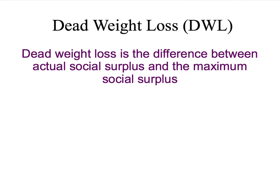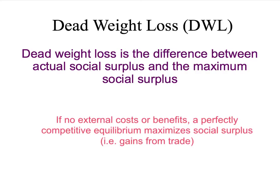In the last presentation, we introduced the concept of deadweight loss — the difference between actual social surplus and the maximum level of social surplus. We also found that if there are no external costs or benefits, the outcome that maximizes social surplus is in fact the perfectly competitive equilibrium.